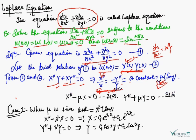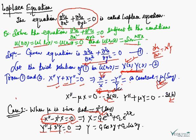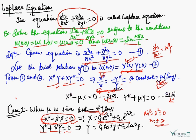Case 1: μ is positive; assume μ = λᵢ². Equations 3a and 3b become X'' − λᵢ²X = 0 and Y'' + λᵢ²Y = 0. Solving 3a, the auxiliary equation gives m² − λ² = 0, so m = ±λ, and therefore X = c₁e^(λx) + c₂e^(−λx).